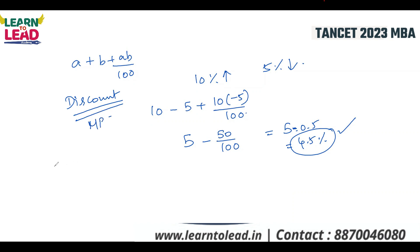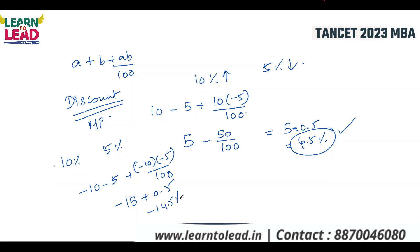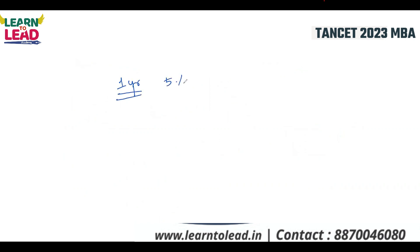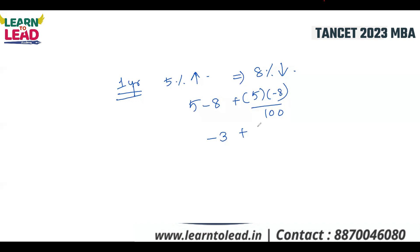For two successive discounts or reductions using the same formula: minus 10 minus 5 plus (−10 × −5 / 100) = minus 15 plus 0.5 = minus 14.5%, meaning a 14.5% total decrease. For population: first year 5% increase, second year 8% decrease. Overall percentage change = 5 minus 8 plus (5 × −8 / 100) = minus 3 minus 0.4 = minus 3.4%, so population decreased by 3.4%.